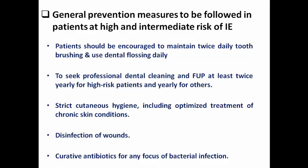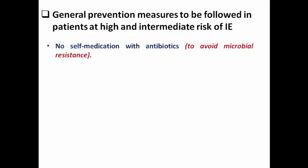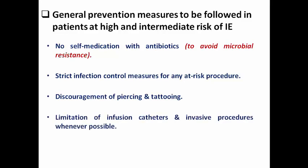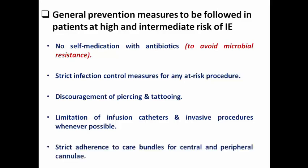Additional measures include strict skin hygiene with optimized treatment for chronic skin conditions, disinfection, and curative antibiotics for any focus of bacterial infection — but advise patients to avoid self-medication with antibiotics to prevent microbial resistance. Strict infection control should be applied for any at-risk procedure in hospital or clinic. Discourage any type of piercing or tattooing, limit use of infusion catheters and invasive procedures whenever possible, and adhere strictly to care bundles for central and peripheral cannulas, especially central venous catheters, due to the increased risk of infective endocarditis.